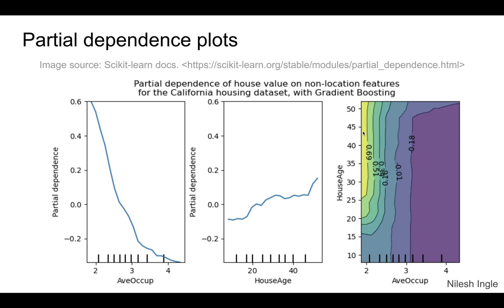Additionally, if we plot average occupancy versus house age with house value on the z-axis shown by contours, we can see that as we move away from two, the effect of average occupancy on house value seems to diminish. For the most part, it is the lower average occupancy values that affect house value together with house age.